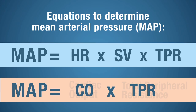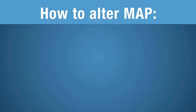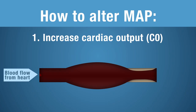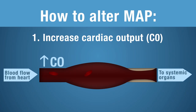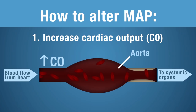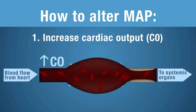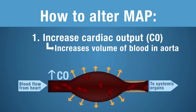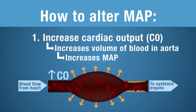So how can we change MAP? If I change heart rate, stroke volume, or TPR, that will alter MAP. One way is by increasing cardiac output. If I increase CO, that means I have more blood leaving the heart. When blood leaves the heart and the ventricles contract, that's going to cause the aorta to expand outward. So increasing cardiac output increases the volume of blood in the aorta, and that's going to increase MAP.